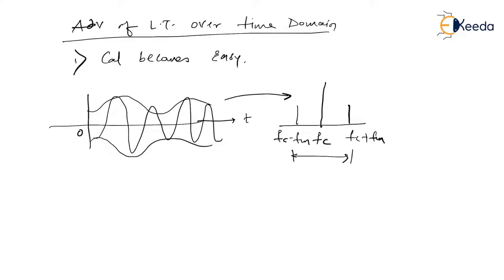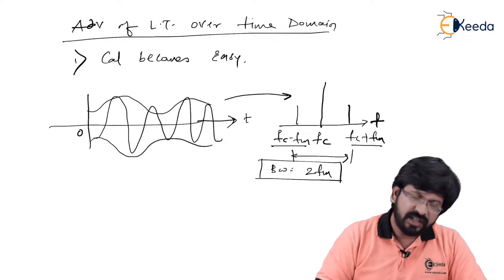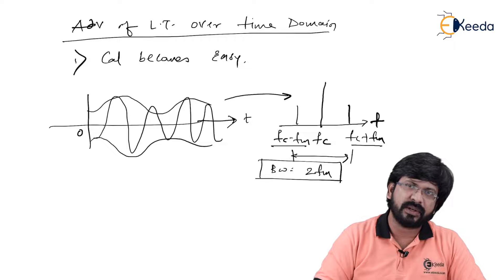By transforming the AM signal into the frequency domain, you get components: the fc component, fc plus fm, fc minus fm, and the fm component. The range of frequency over which the information is available becomes visible. Calculating upper frequency minus lower frequency gives you twice of fm as the bandwidth. To get bandwidth, you need frequency on the x-axis. To convert time domain signals to frequency domain, transformation tools like Fourier analysis or Laplace transformation are used.